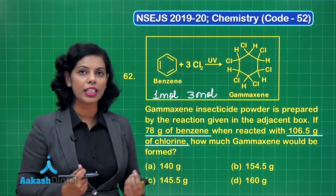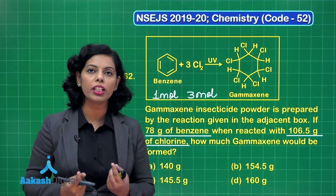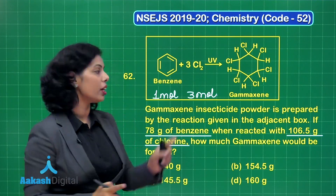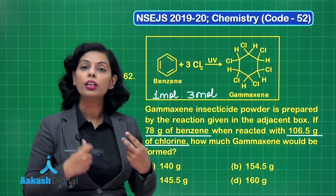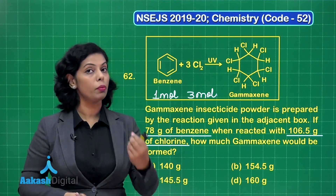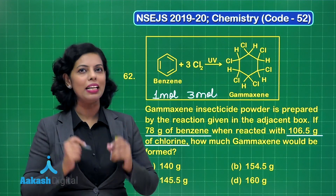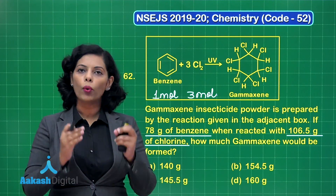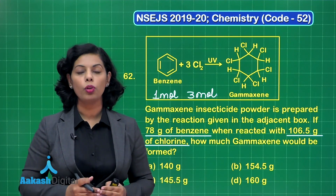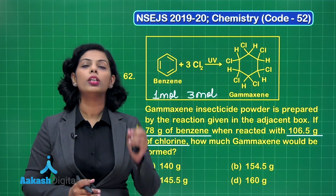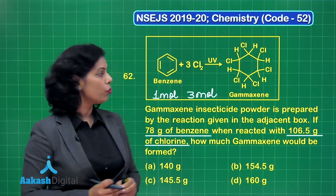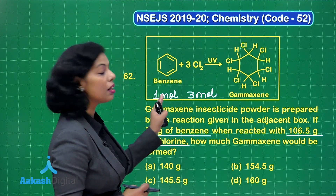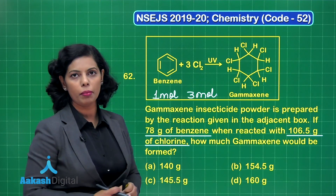Whenever 1 mole of benzene reacts with chlorine to give gammexene, the required moles of chlorine would be 3 moles. On the basis of this, we will identify the limiting reagent — the substance which limits the reaction and determines the amount of product formed. We need to identify whether benzene or chlorine is the limiting reagent.